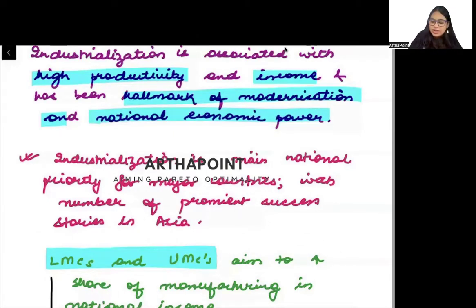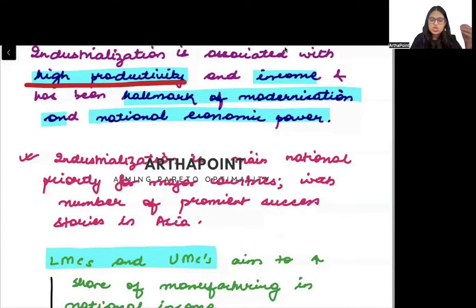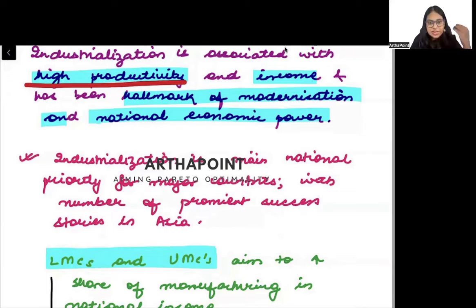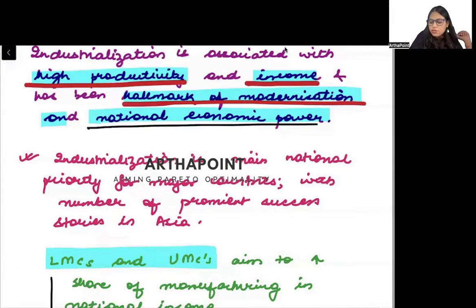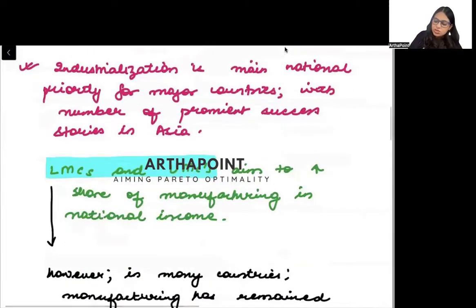Industrialization is associated with high productivity and income, and is a hallmark of modernization and national economic power. When you use machines instead of labor there will be more productivity, you will produce cheaper products, increase demand, employ more people, and incomes will rise — leading to modernization and increased GDP.